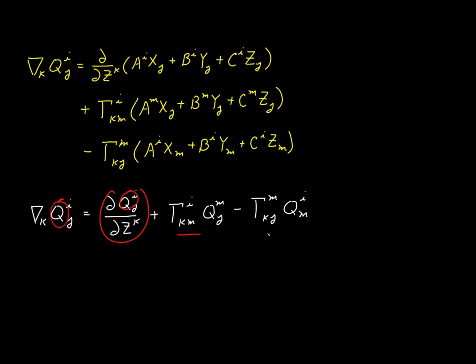Then we add two terms. One with a contraction for the upper index, and it's a positive term. And one for a contraction of the lower index, and it's a negative term.